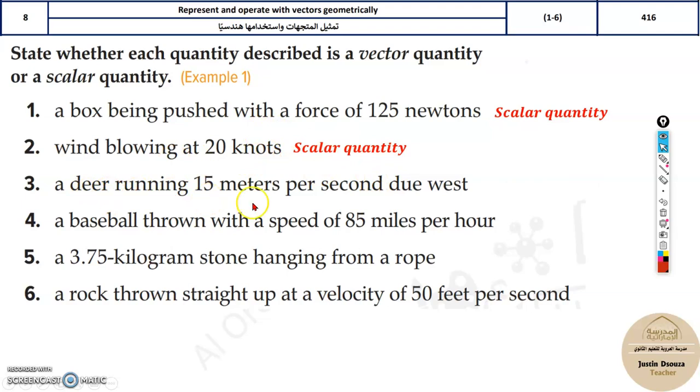A deer running 15 meters per second due west. It will be a vector because the direction is given and the magnitude, the speed is given.